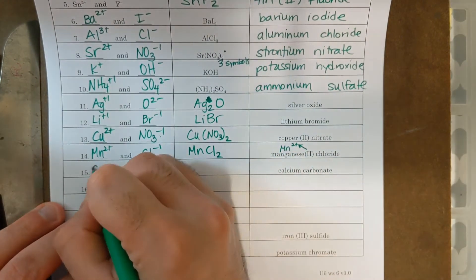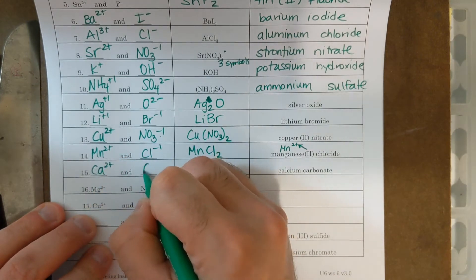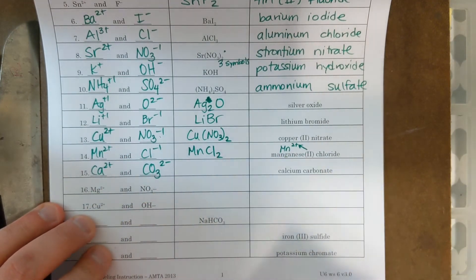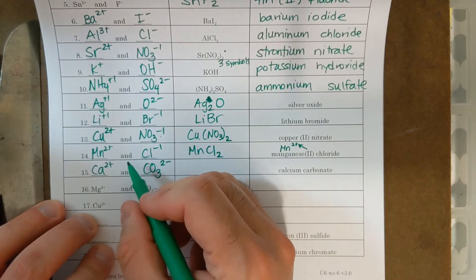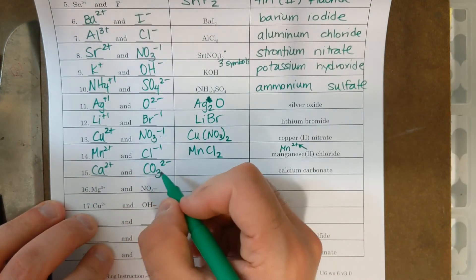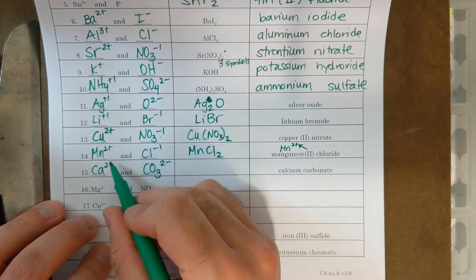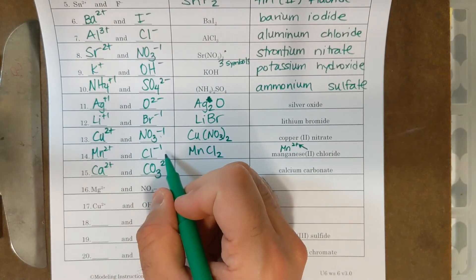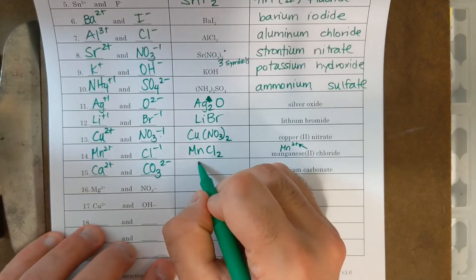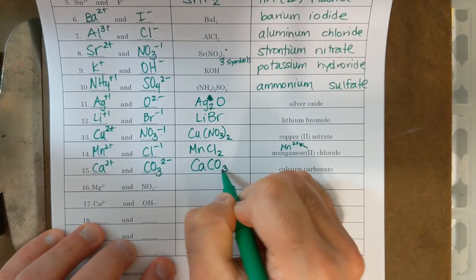Next one, calcium carbonate. Calcium is Ca2 plus. Carbonate, another polyatomic ion, is CO3, two minus. It looks like if I do the crisscross method, I'll get Ca2, CO3, two. But look at their charges. The sum of them already add up to zero. Two plus and two minus is zero. So I only need one of each. Calcium carbonate is CaCO3.